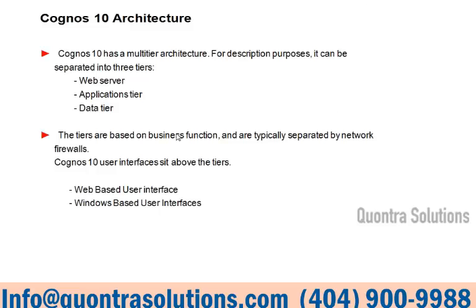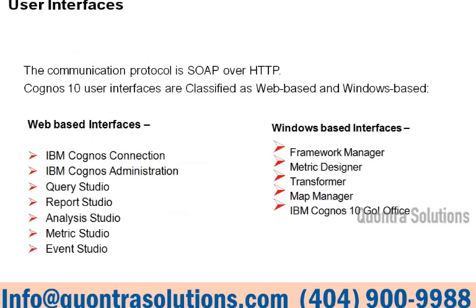Cognos 10 has a multi-tier architecture. For description purposes it can be separated into three tiers: web server, application server, and data server. It also has user interfaces that sit above the tiers — web-based and windows-based. The communication protocol is SOAP (Simple Object Access Protocol) over HTTP.